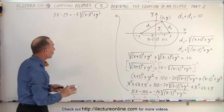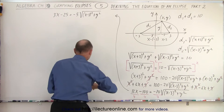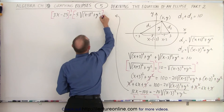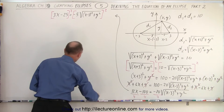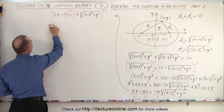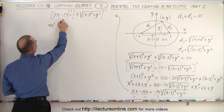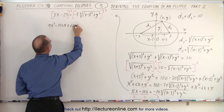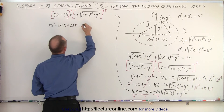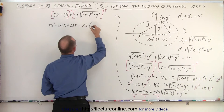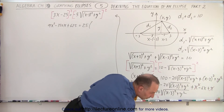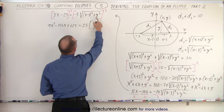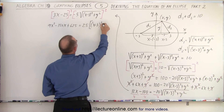And now to get rid of that radical, we're going to square both sides again. So we square the left side and square the right side. When we do that on the left side we get 9x squared, twice the product of those two gives minus 150x, and then plus 625 is equal to positive 25 times the quantity x minus 3 squared plus y squared.